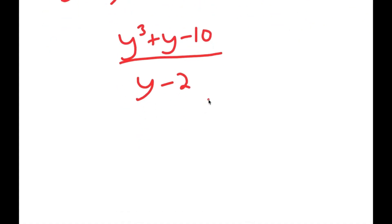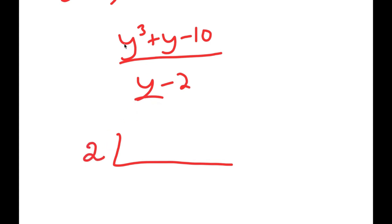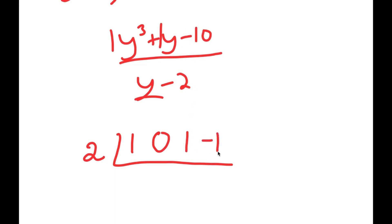The easiest way to do this is by synthetic division. For synthetic division, since y minus 2 gives us 2, I put 2 on the outside. For the numerator, I focus on the coefficients. The leading term y cubed has a coefficient of 1. The next term y squared is missing, so that's a 0. Then y to the power of 1 has a coefficient of 1, and finally we have negative 10 at the end.